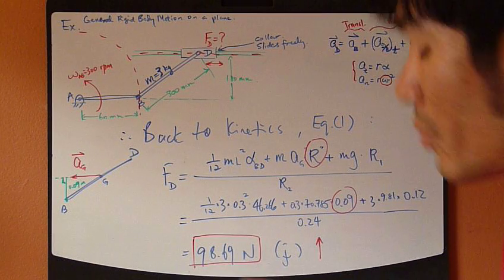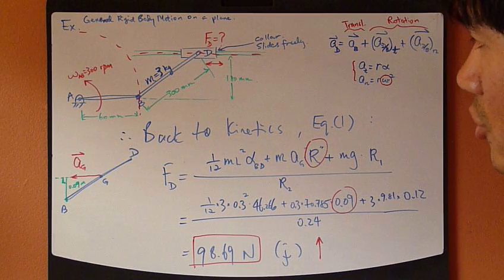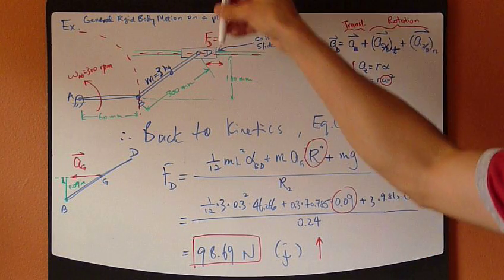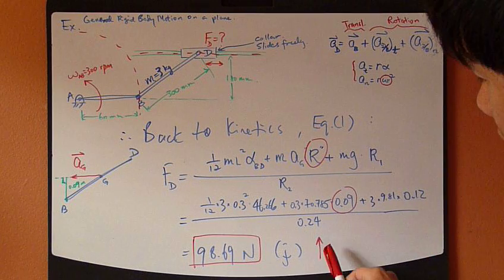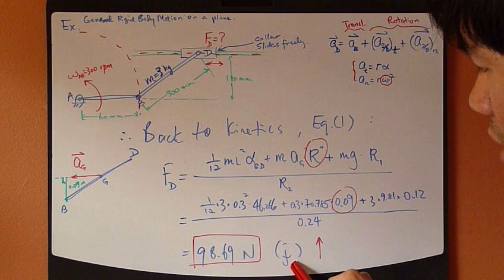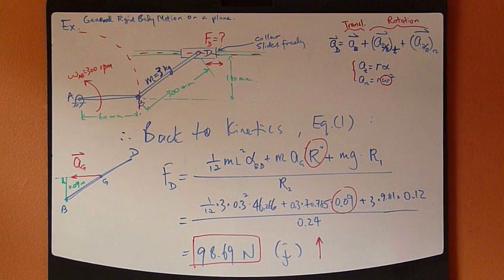And it's a positive number, which means that our original assumption of SD, that's pointing up, is correct. It means that it's positive J direction, going up. That's it.